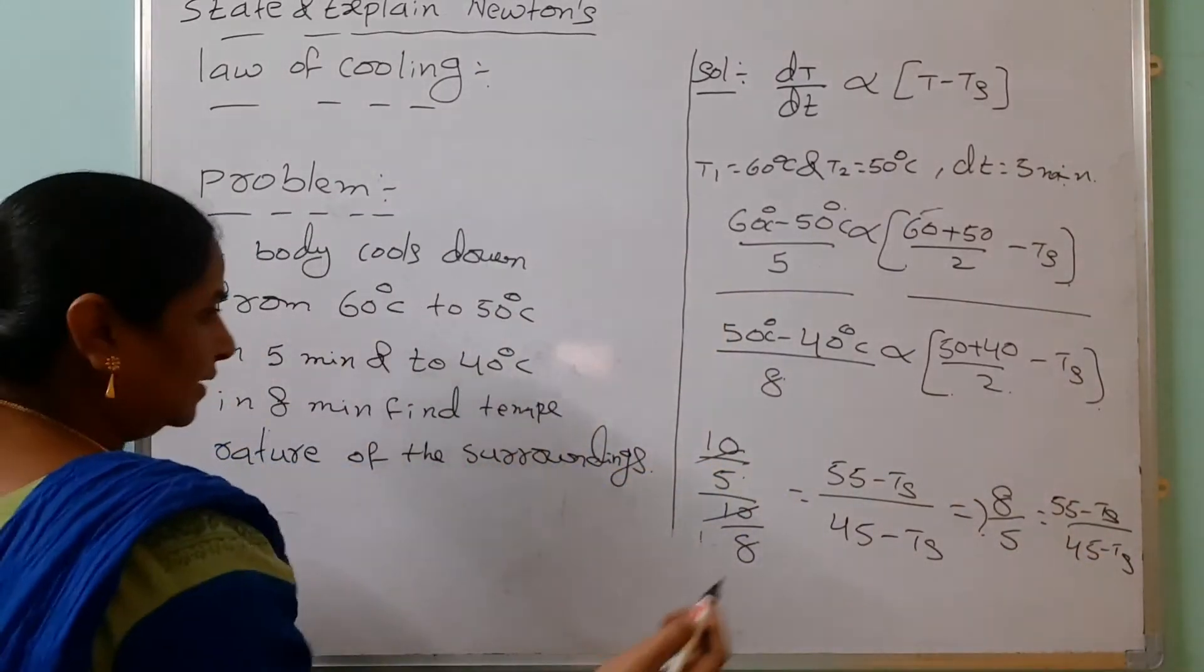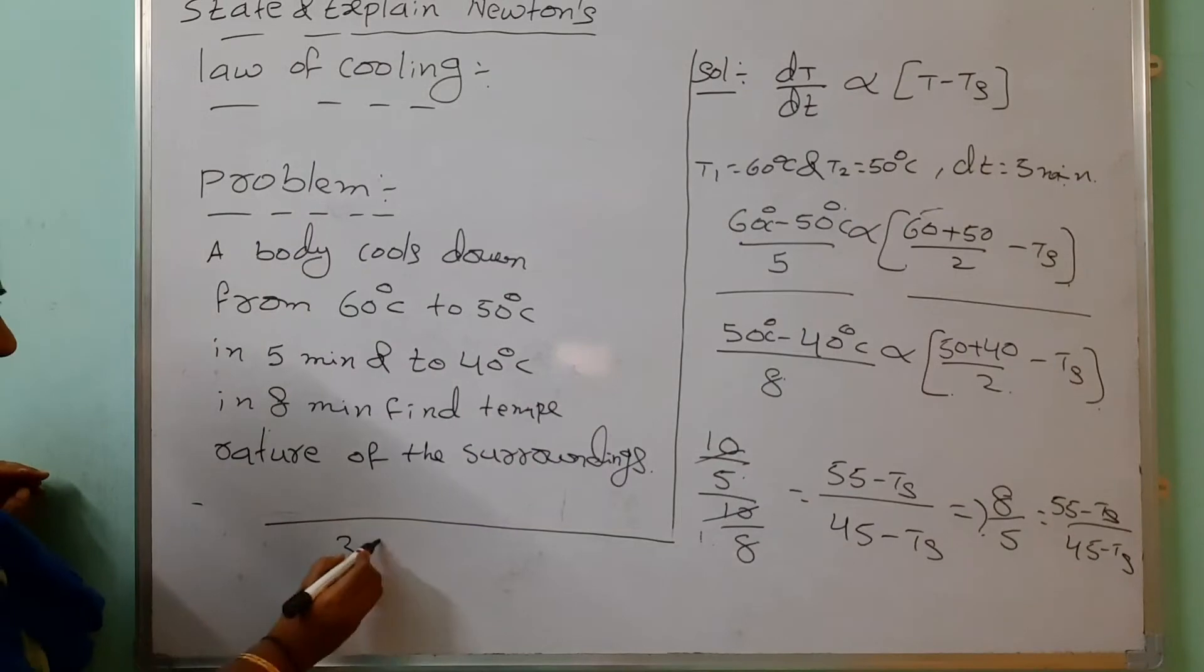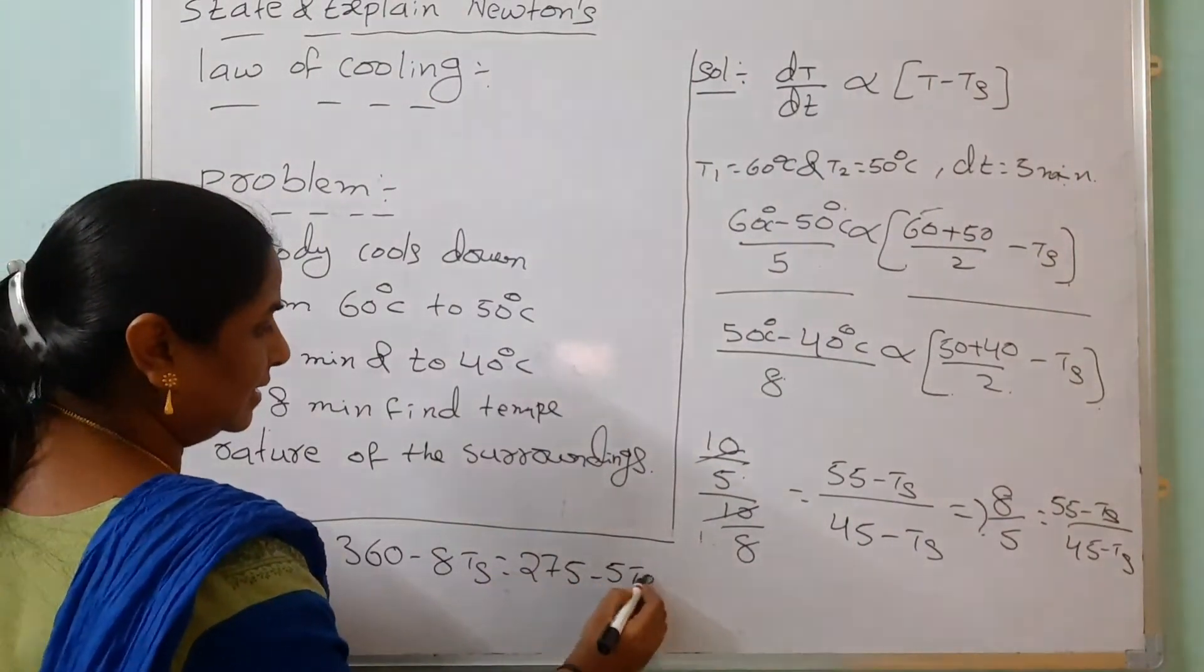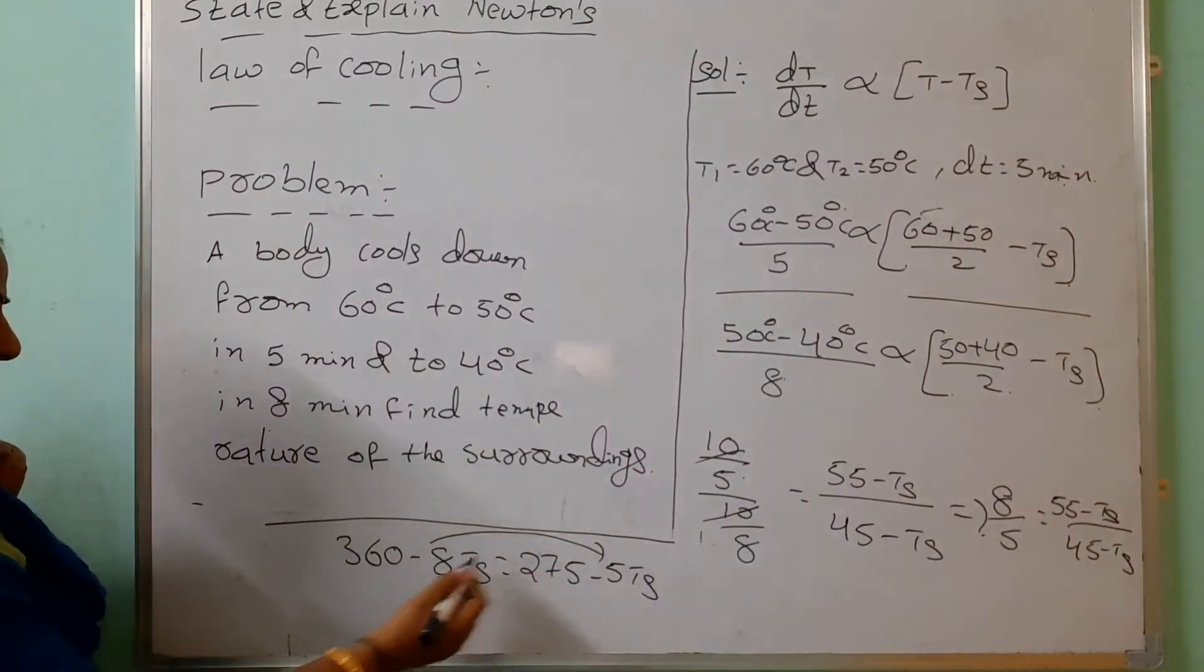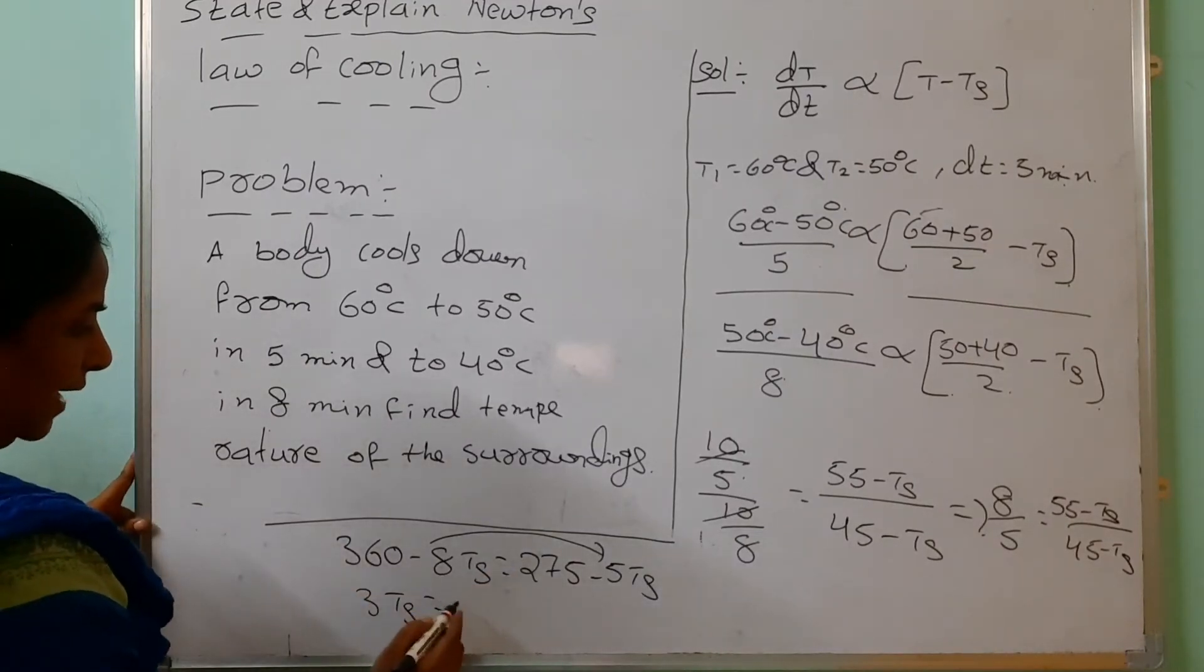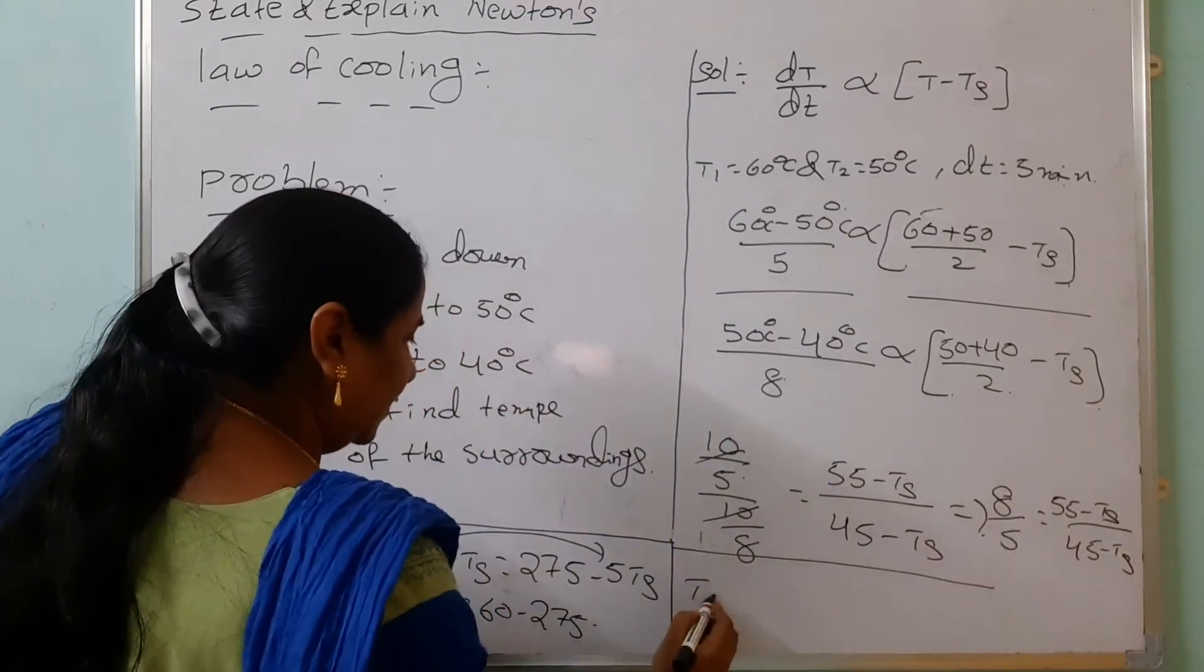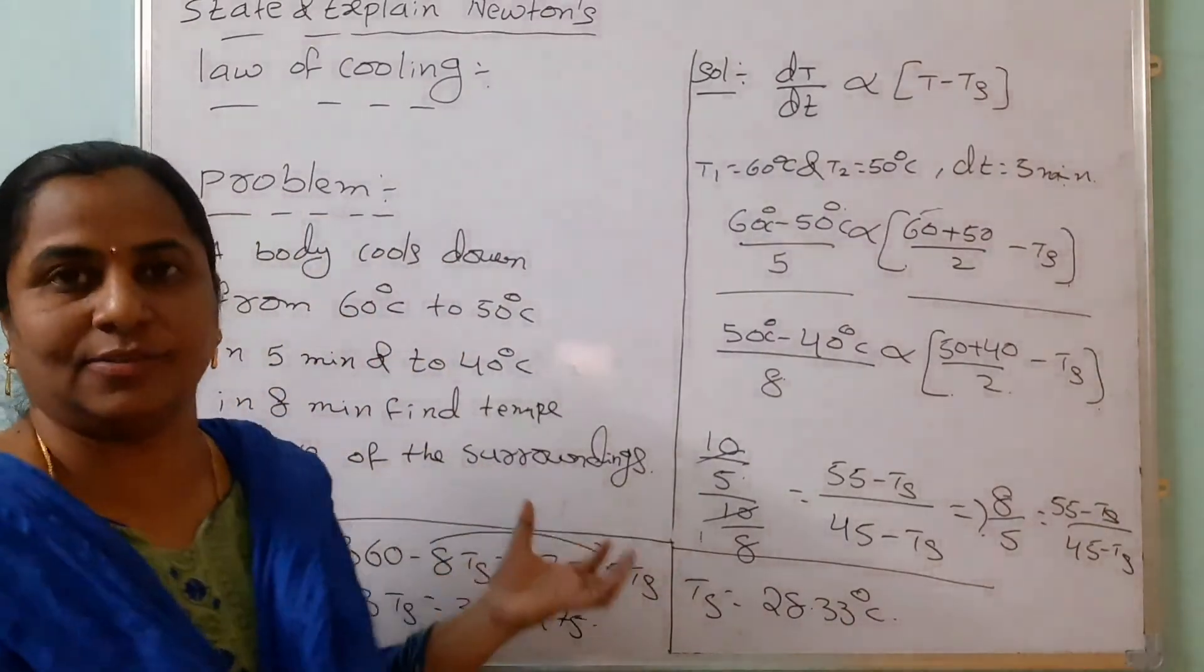Do the cross multiplication. What we are getting here? 45 into 8 is 360 minus 8 TS equals to 275 minus 5 TS. When we are sending this to that side, what we are getting? 8 minus 5 is 3 TS equals to 360 minus 275. After simplification, we are getting the temperature of the surroundings is 28.33 degrees centigrade. So like that we can solve this one.